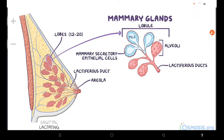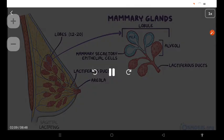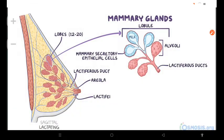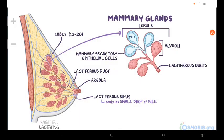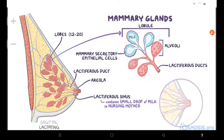Each lactiferous duct has a dilated portion deep to the areola, called the lactiferous sinus, in which there's a small drop of milk that accumulates or remains in a nursing mother, which becomes expelled from the areola when compressed during feeding.